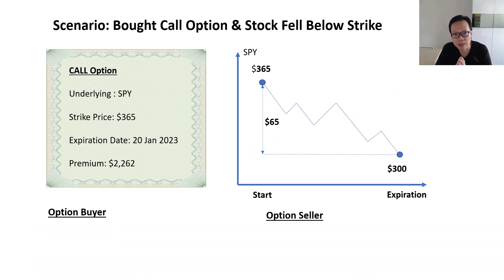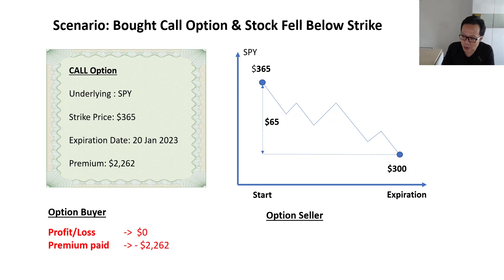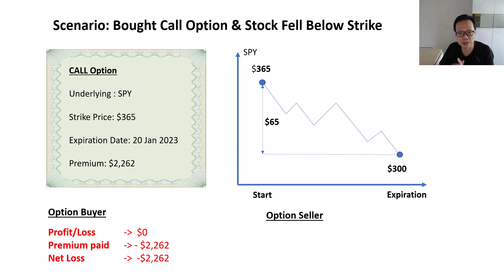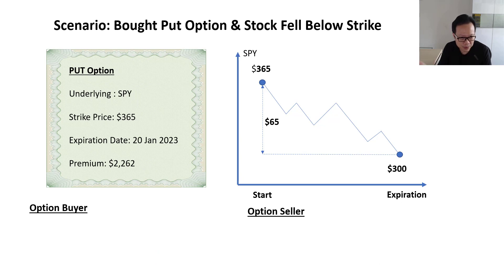Using the same example, but this time SPY falls to $300 — a drop of $65. As the option buyer, you will not exercise the call because it doesn't make sense to buy SPY at a higher price than the market is offering. You have the right but not the obligation. Your loss is the $2,262 premium you paid. Had you bought the stock instead, you would have lost $6,500 — so options limited your downside to just the premium. The option seller, on the other hand, gets to keep the full premium.